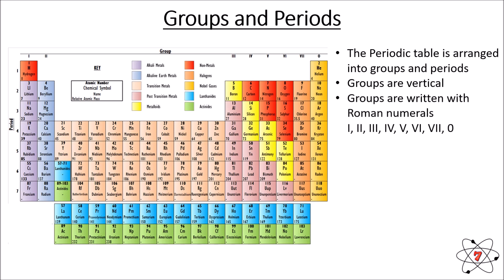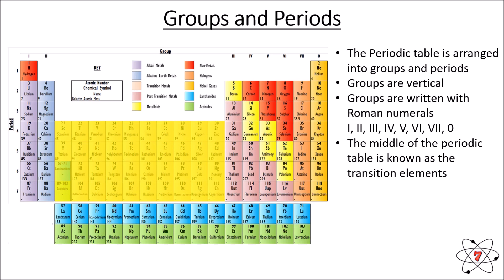It's worth pointing out that groups are written with Roman numerals — we always use Roman numerals when describing the group, so group four would be group IV, for example. The middle of the periodic table, which is not part of any group, is known as the transition elements or transition metals. When we're talking about groups, we are never going to be talking about these transition elements.